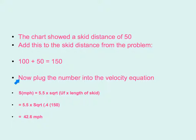Now we will plug the number into our velocity equation. Remember our velocity equation is speed in miles per hour equals 5.5, our standard, times the square root of our correction factor times our length of the skid mark. So 5.5 times the square root of 0.4, this was gravel, this was stated in our problem, times 150. Answer, the car was going 42.6 miles per hour.